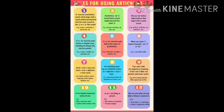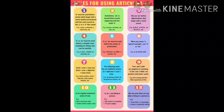Seventh point: such plus A or AN plus noun, or such plus A or AN plus adjective plus noun. Eighth point: the following word has an indefinite article — so plus adjective plus A or AN plus noun. Example: so boring a book. Ninth point: few and little are negative in meaning. A few and a little are positive and mean 'some'. Example: he is young and has little experience of life.